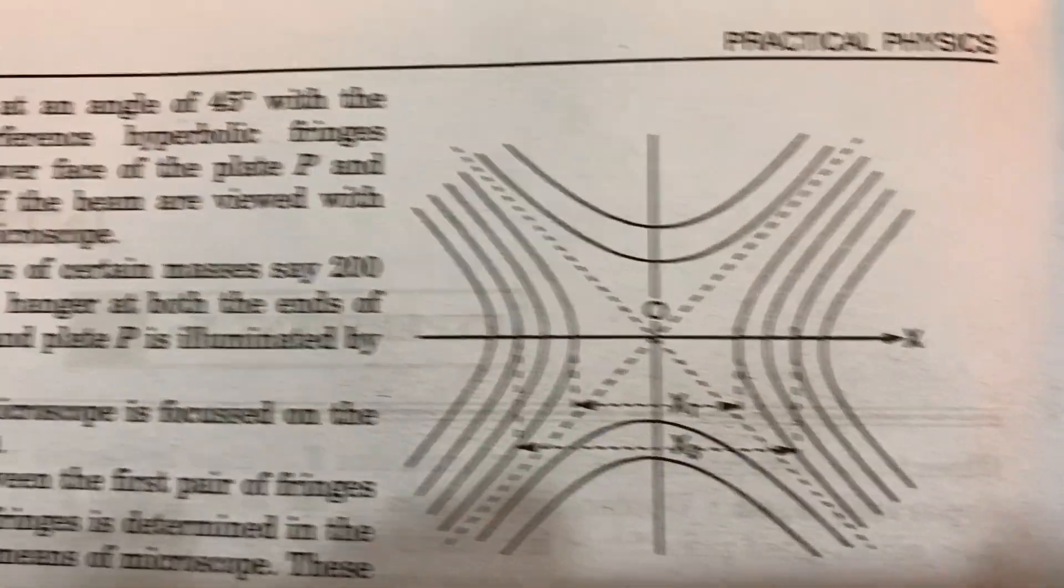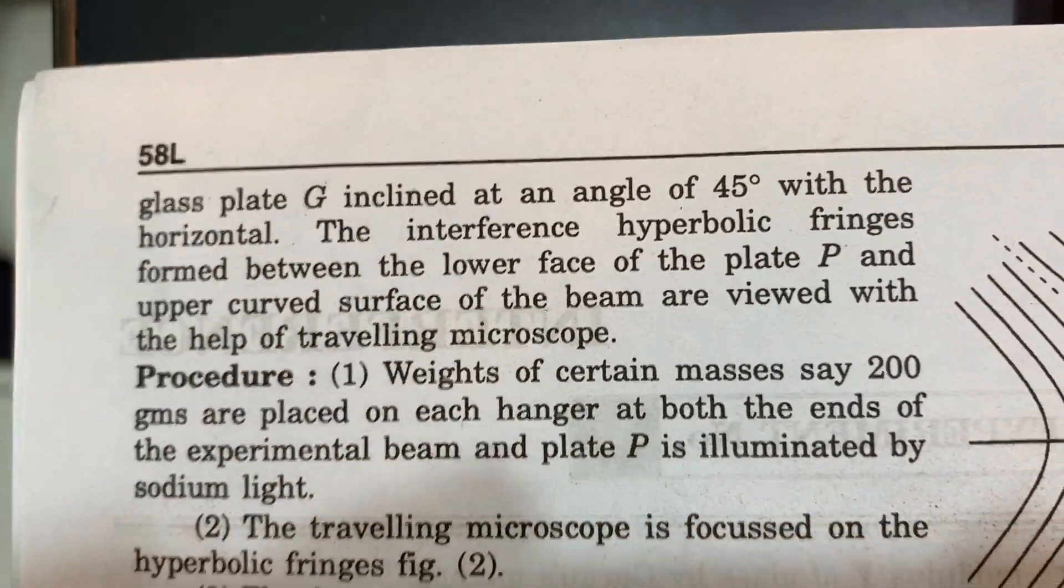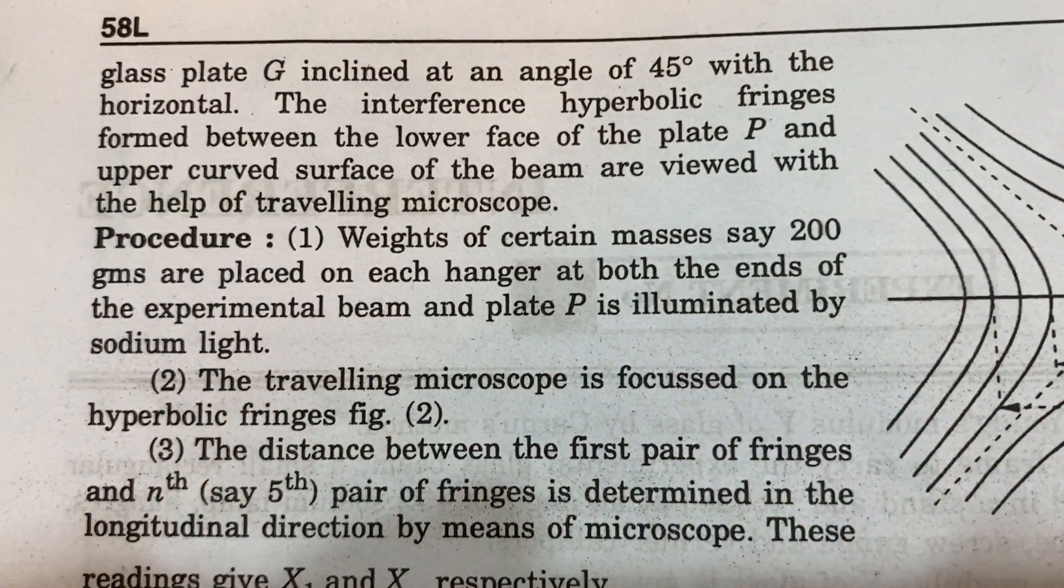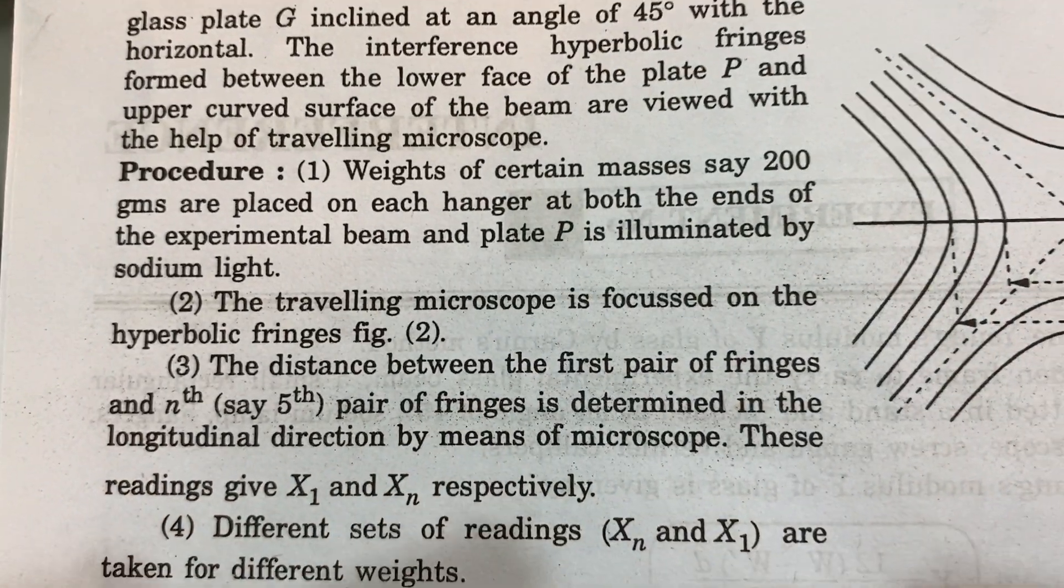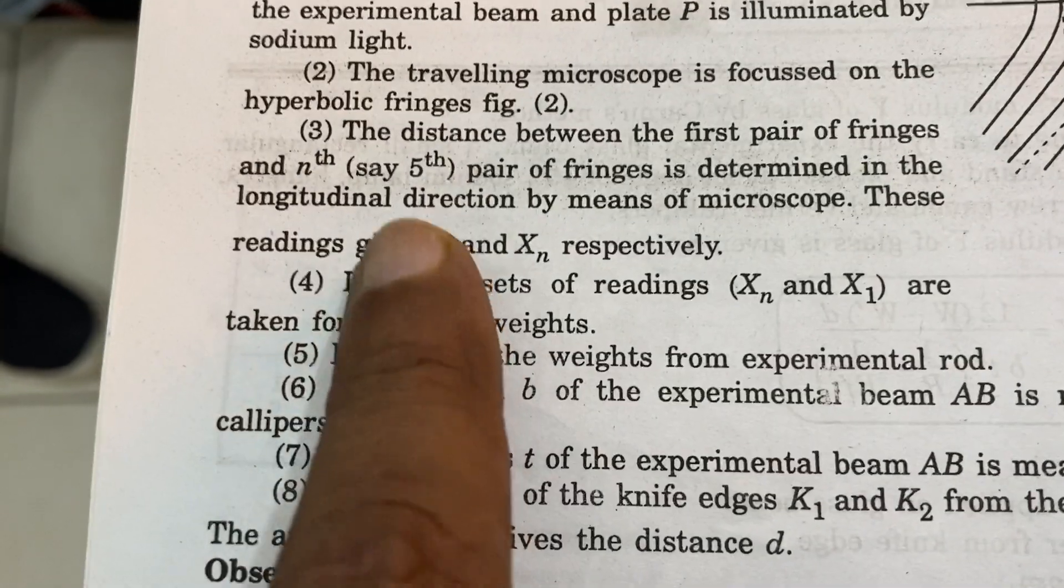Due to the hyperbolic interface and the monochromatic light, you can see the curvature. Instead of a traveling microscope, we are using a special microscope which is a Newton's ring microscope.